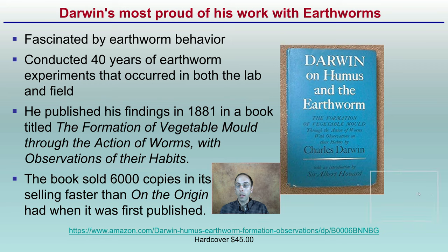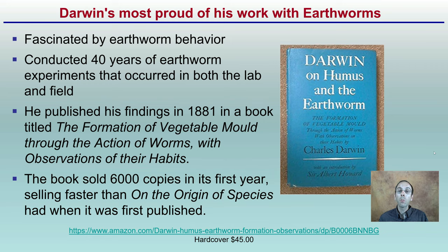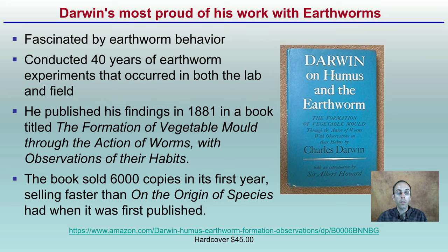Even though we may know The Origin of Species as his most famous work, Darwin was most proud of his work on earthworms. He was fascinated by their behavior and conducted 40 years of earthworm experiments in both the lab and the field. He published his findings in 1881, and the book sold 6,000 copies in its first year — selling faster than The Origin of Species when it was first published.